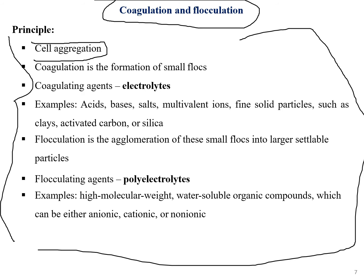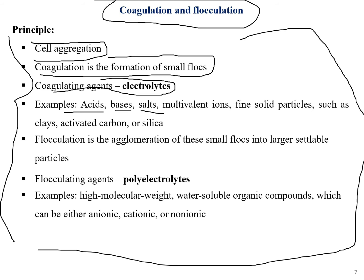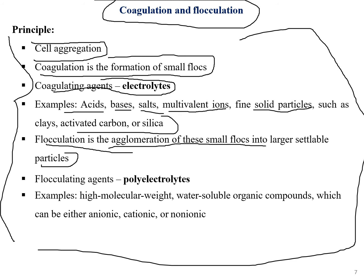Coagulation leads to the formation of small flocks — small bundles or colonies of cells. Coagulating agents are electrolytes, with examples including acids, bases, salts, multivalent ions, and fine solid particles such as clay, activated carbon, or silica. Flocculation, on the other hand, is the agglomeration of these small flocks into larger, settable particles.